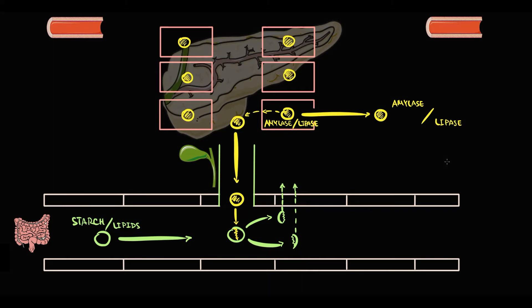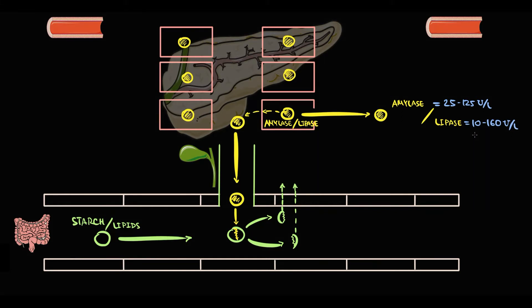Under normal conditions, renewal of the acinar cells produces 25 to 125 units per liter of amylase and 10 to 160 units per liter of lipase in the blood.